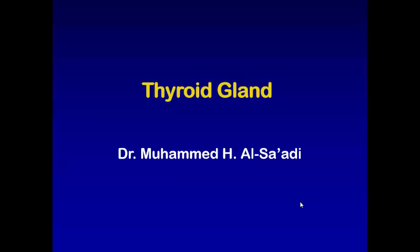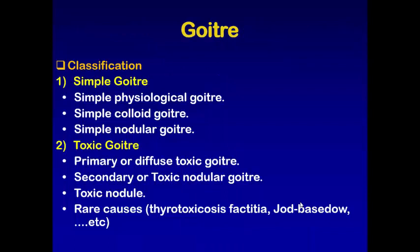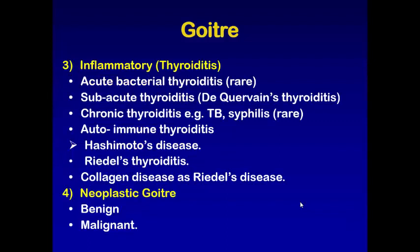We have talked in the previous lectures about the goiter, and we mentioned that the goiter is enlargement of the thyroid gland. We classified the goiter into: simple goiter, second group toxic goiter, third group inflammatory or thyroiditis group, and the fourth group neoplastic goiter. In this lecture, we will discuss the inflammatory and the neoplastic goiter.